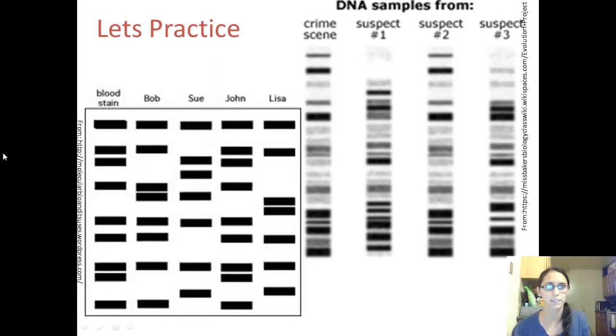Now let's practice. We'll do this one first. We have images of gels, and this is DNA from a blood stain and this is DNA from different people. Whose blood stain is this? If we compare this row to these other rows. Correct. This blood stain belongs to John because this is similar to John's DNA here. You can see that these line up. These DNA fragments line up.